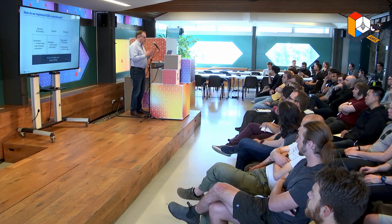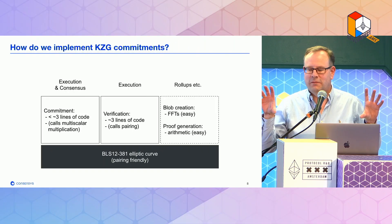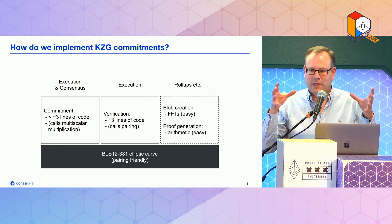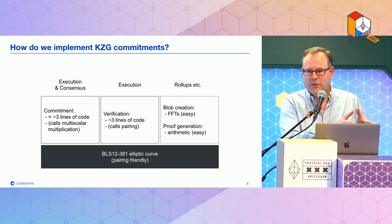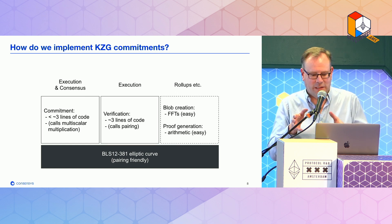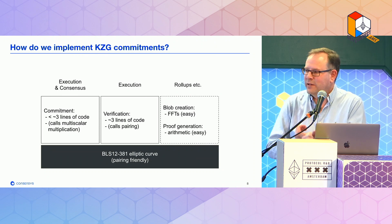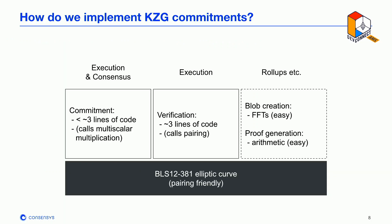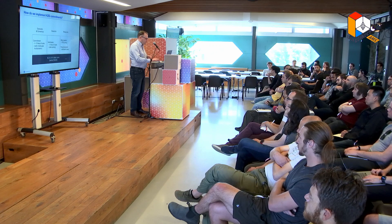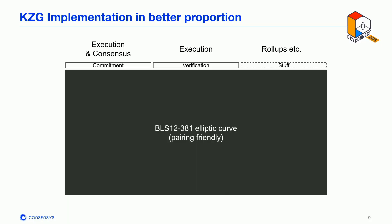To summarize where things happen and how we build this: at the bottom we have the elliptic curve library BLS12-381, which is off the shelf and black-boxed. On top of that we have code to implement commitments, and code to implement verification. On the rollup side and outer protocol, creating blobs uses fast Fourier transforms, and proof generation is just some elliptic curve arithmetic. In better proportion, KZG commitments are just a very thin layer on top of this big library that already exists.